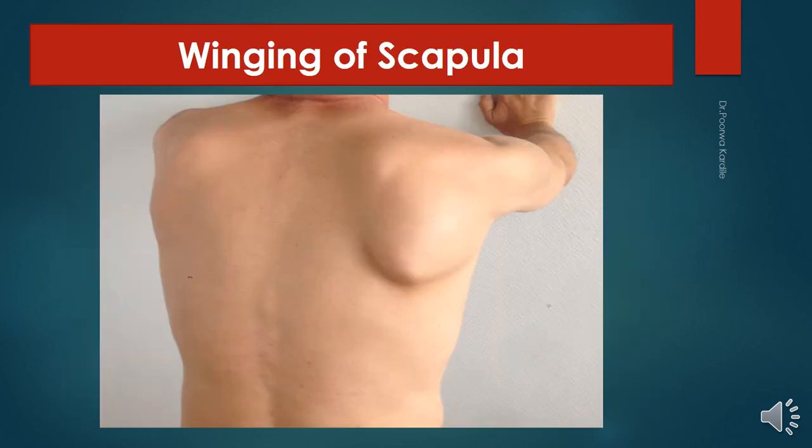This slide is of winging of the scapula. Injury to the long thoracic nerve of Bell or paralysis of the serratus anterior muscle produces winging of the scapula. Causes include sudden pressure on the shoulder from above or carrying heavy loads. The deformity seen is excessive prominence of the medial border and inferior angle of the scapula.